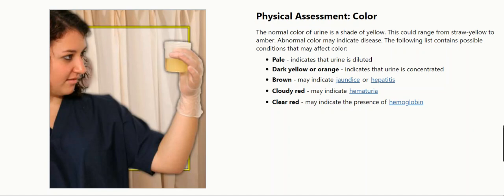The following list contains possible conditions that may affect color: Pale indicates that urine is diluted. Dark yellow or orange indicates that urine is concentrated. Brown may indicate jaundice or hepatitis. Cloudy red may indicate hematuria. Clear red may indicate the presence of hemoglobin.